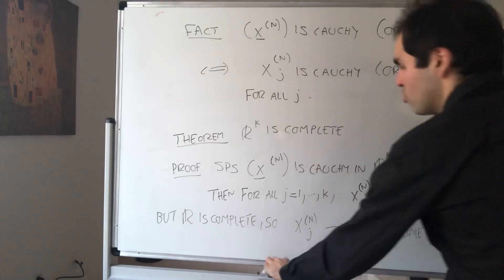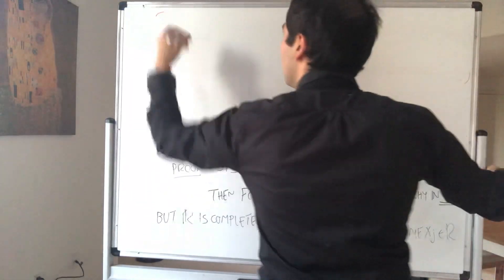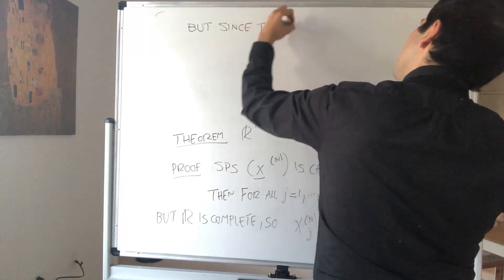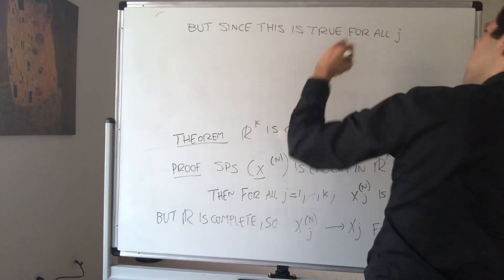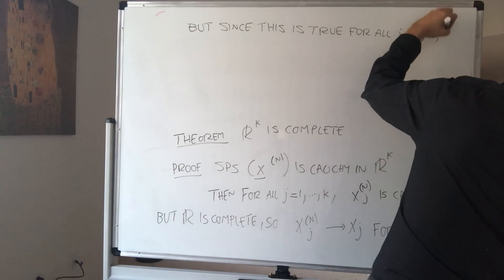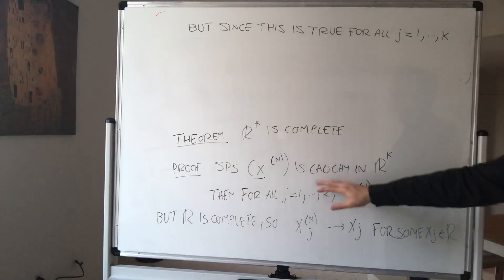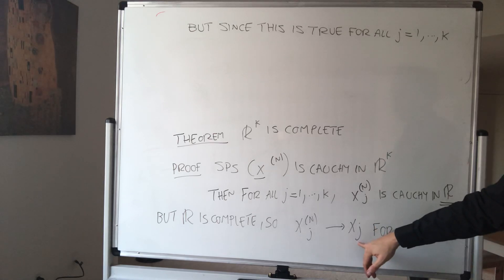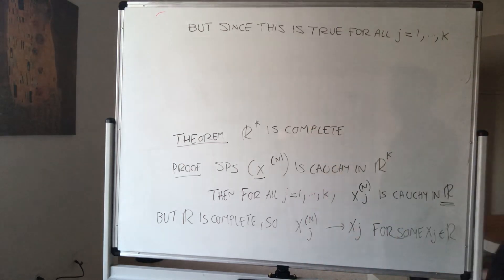But then, since this is true for every j from 1 to K, what do we get? So again, what have we shown? We suppose it's Cauchy, then by our theorem every component is Cauchy. So by completeness of R, the components converge. But then by our theorem again, we get that the whole sequence must converge.